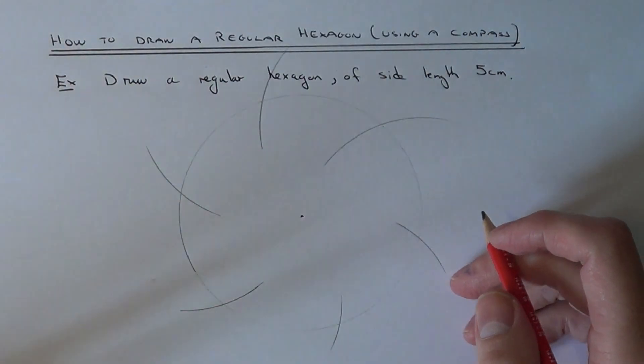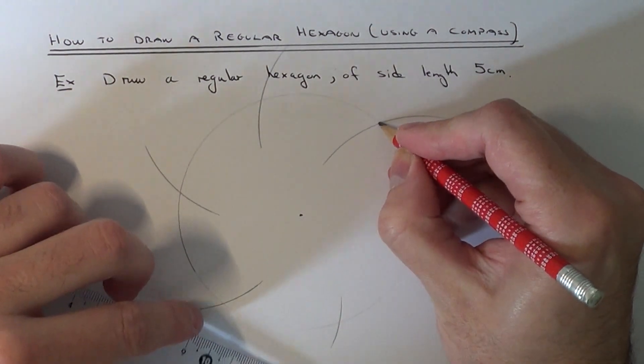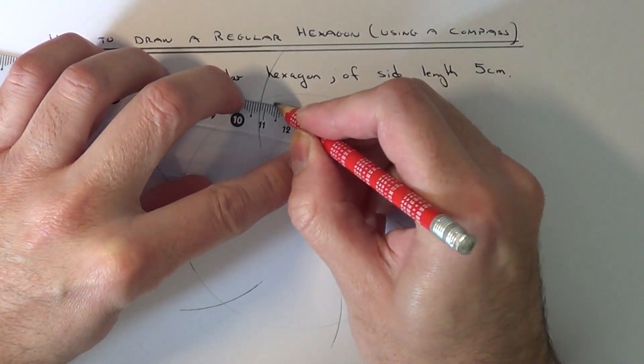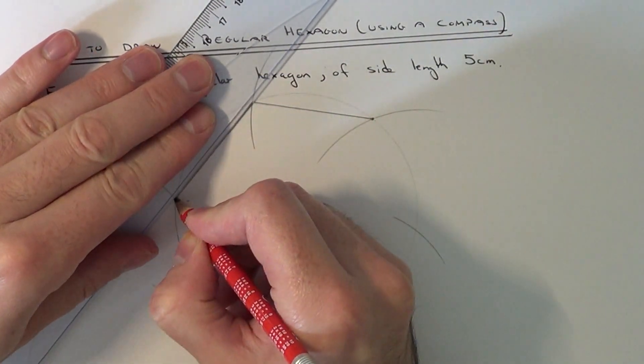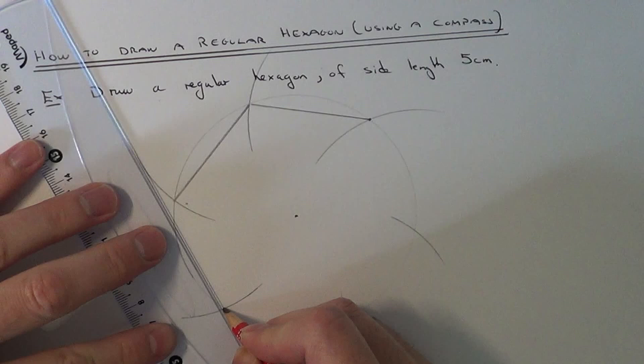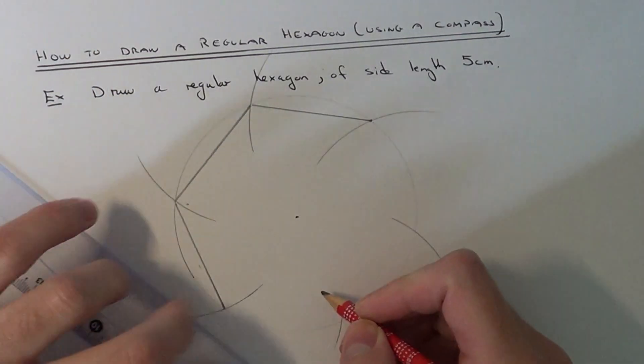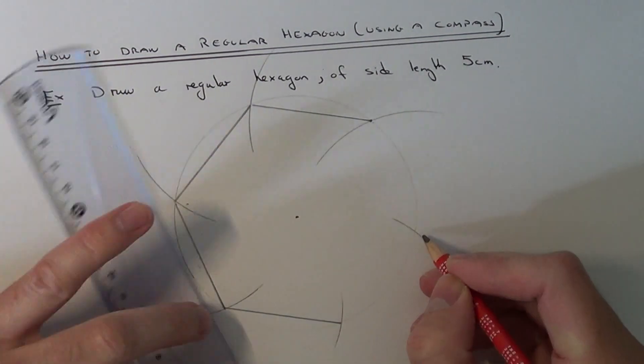And all we need to do now is get your ruler and join up the intersection points. And all being well it should come out as a regular hexagon.